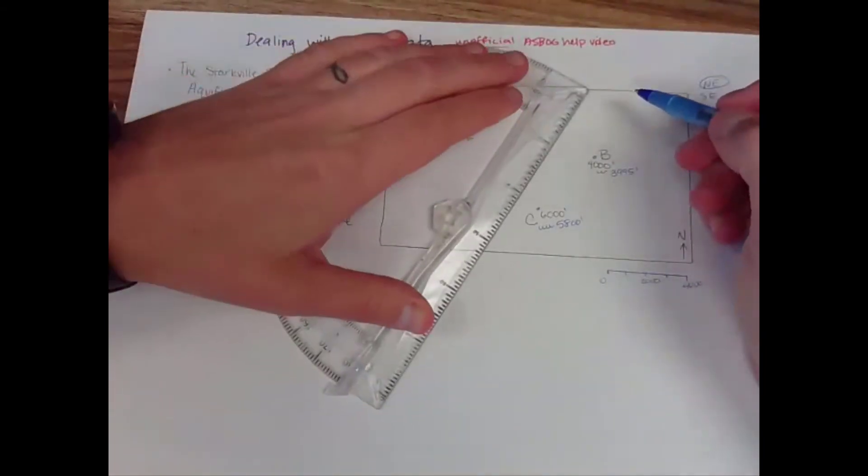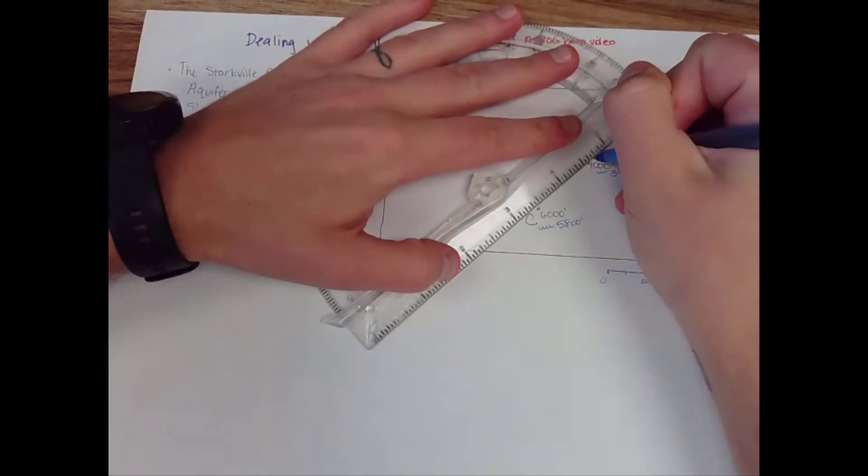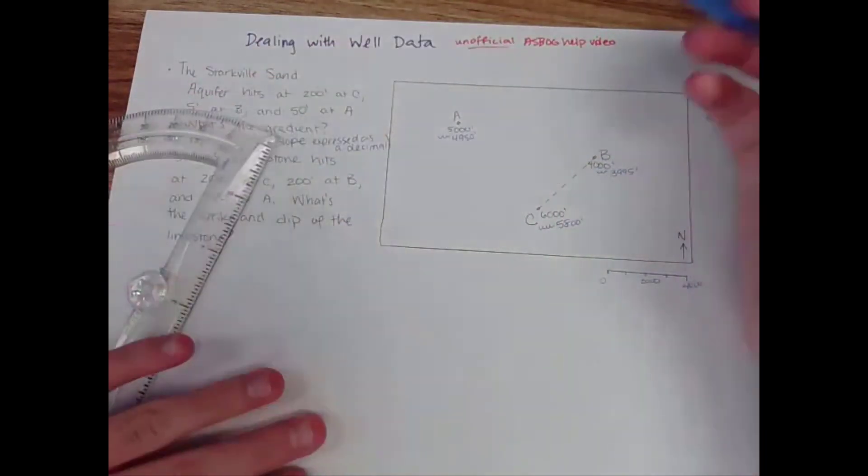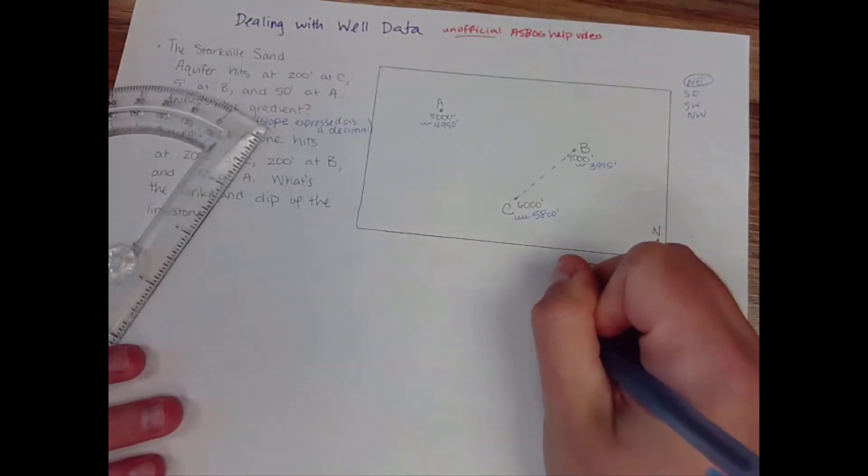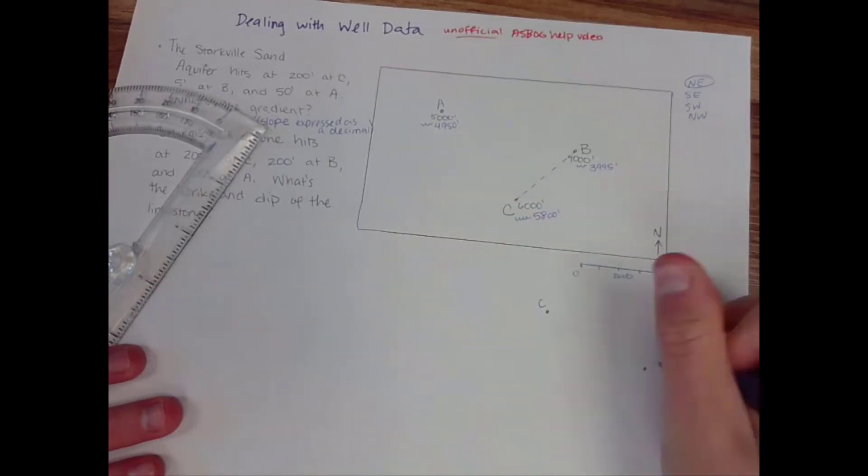All right so I'm going to draw a line between my maximum elevation in the aquifer and my minimum elevation. So that's B to C. Now the way to think about this is that if I go from B to C or C to B, here's C, here's B,